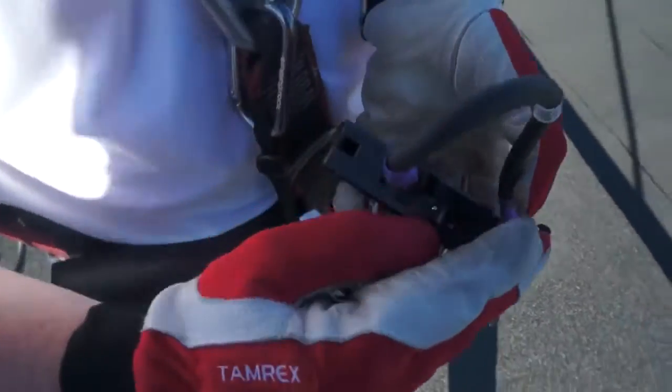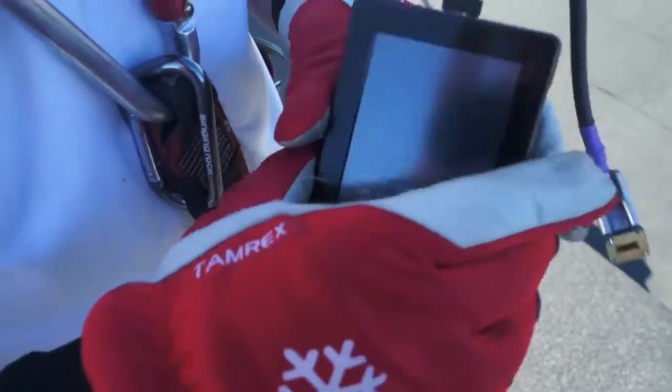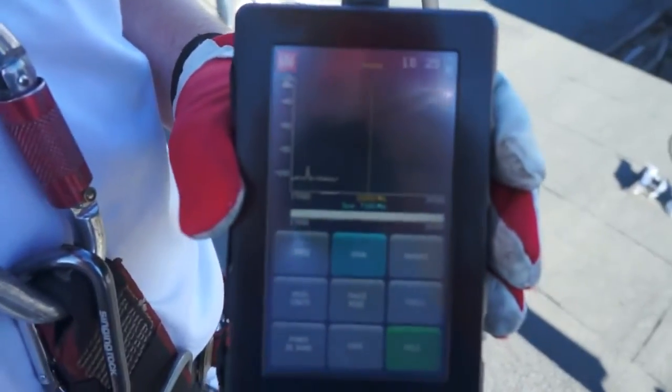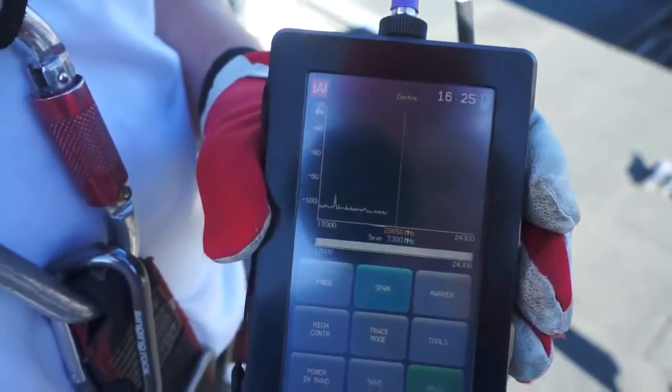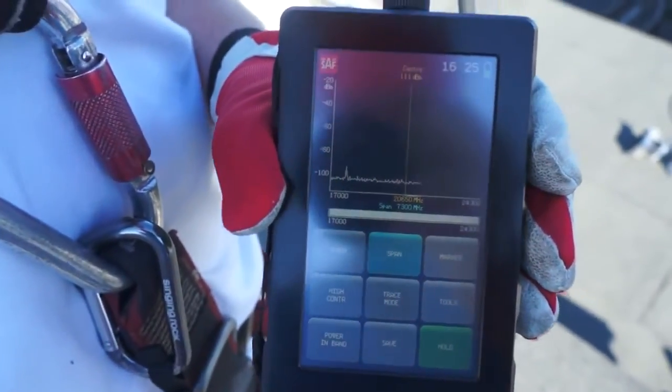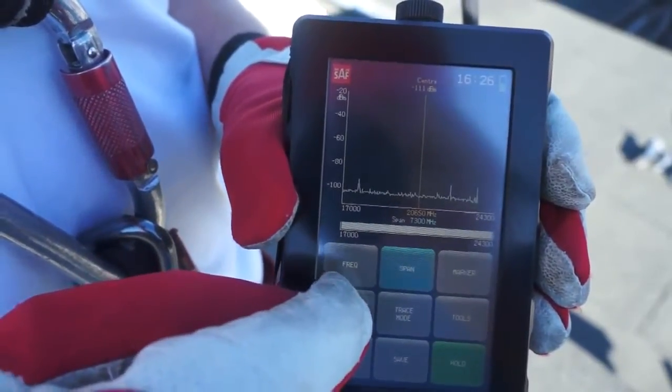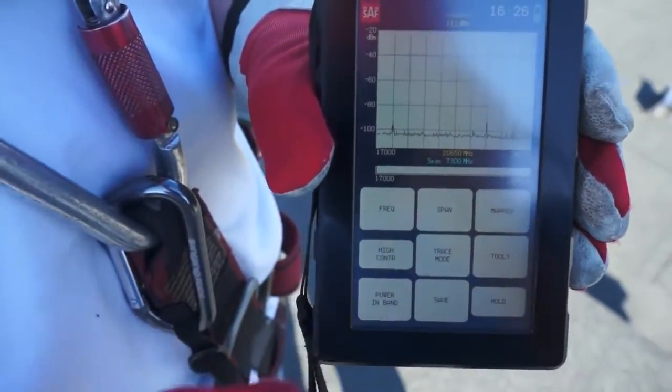Now on the top of the unit is the power button. This is an instant on unit, so you can see it's already powered up and ready to go. Now it does have a beautiful color screen. Unfortunately, it's a bright sunny day, so it's a little bit difficult for me to read. So I'll switch it to high contrast to make it very easy to read.